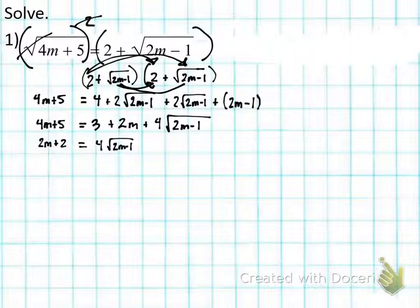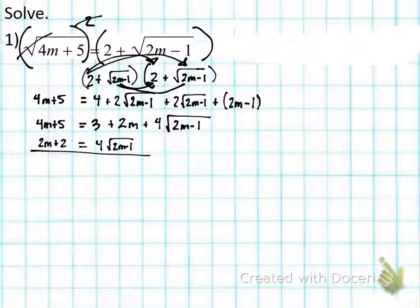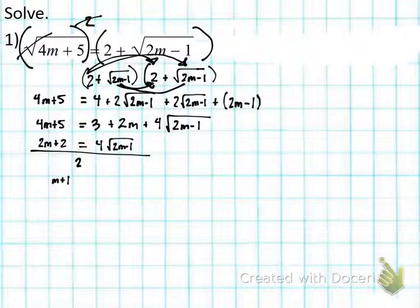Before squaring, I want to simplify. Can I factor anything from 2m, 2, and 4? Yes — two goes into all of them. So I divide both sides by two: 2m ÷ 2 = m; 2 ÷ 2 = 1; 4 ÷ 2 = 2. So I get m + 1 = 2√(2m−1). Now this is isolated, so I'm going to square both sides.